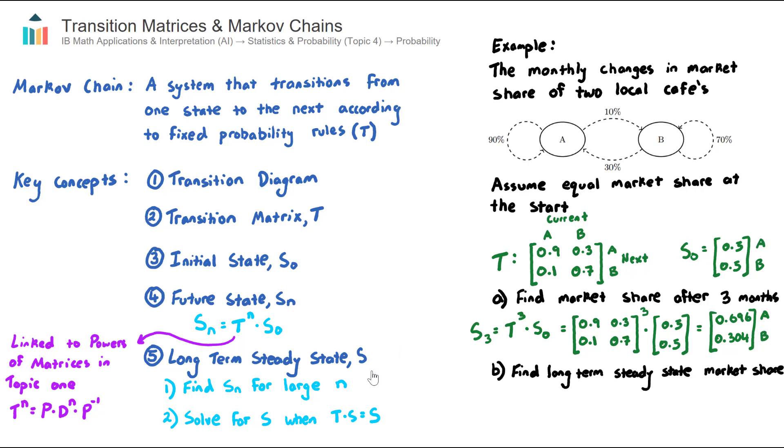The fifth and final key concept we need to talk through is what's called long-term steady state. What this means is, using this example here in the right-hand side, early on, so in the first few months, month one, month two, month three, month five, the market share is changing between cafe A and cafe B. And it looks like here that cafe A is gaining market share and cafe B is losing market share because they both started at 50-50. But at some point in the future, the market shares will level out and they will no longer change even though the transition matrix is still occurring. It's still being applied to the current state, but at some point it will sort of meet this equilibrium level. And we call that the long-term steady state.